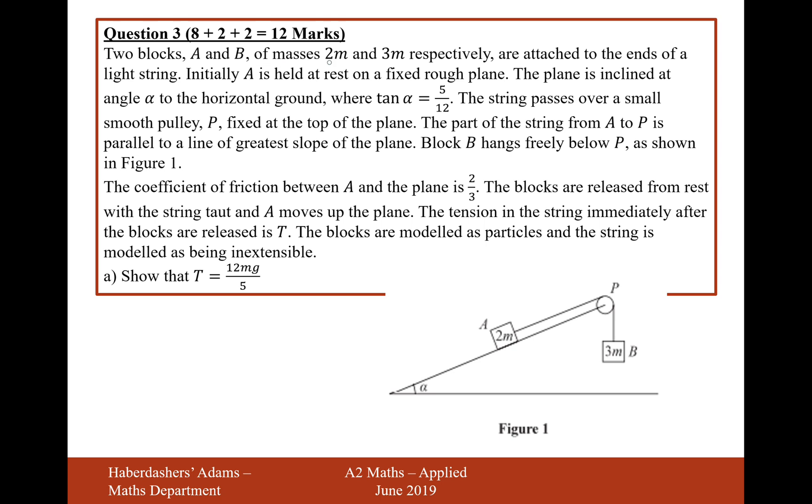Two blocks, A and B, of mass 2M and 3M respectively are attached to ends of a light string. Initially, A is held at rest on a fixed rough plane. The plane is inclined at angle alpha to the horizontal ground, where tan alpha equals 5 over 12. The string passes over a small smooth pulley P, that is fixed at the top of the plane. The part of the string from A to P is parallel to the line of greatest slope of the plane. Block B hangs freely below P, as shown in figure 1.